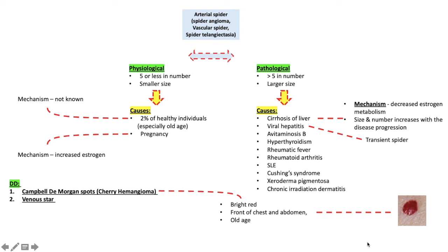Venus star, they are larger in size compared to spider. Spider is typically 0.5 to 1 cm, whereas venus star is 2 to 3 cm in diameter. It is seen over the dependent parts of the body, and the causes are venous insufficiency and CCF.